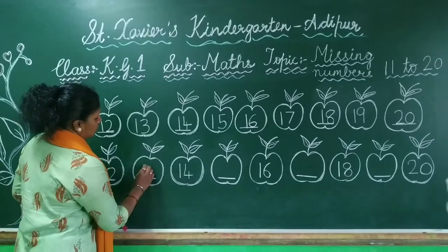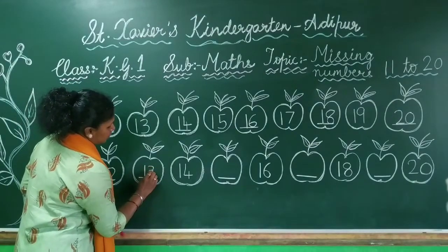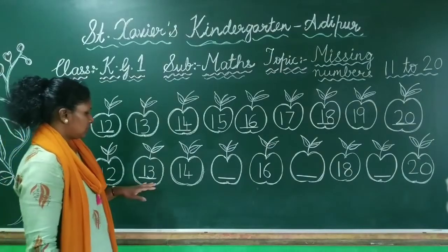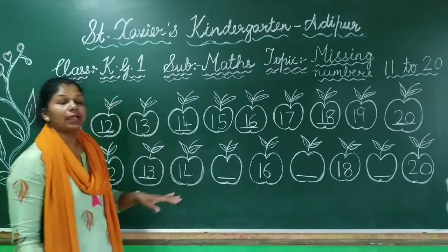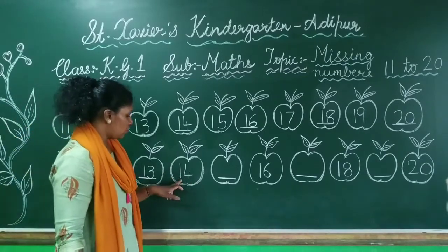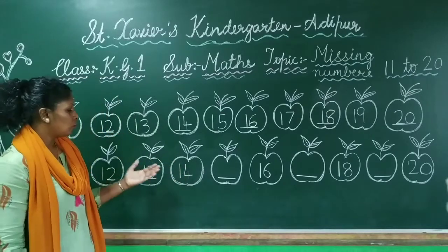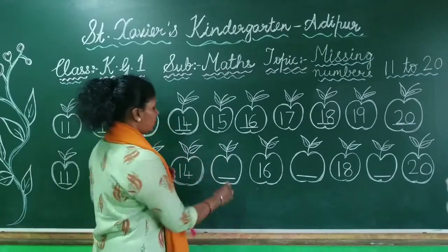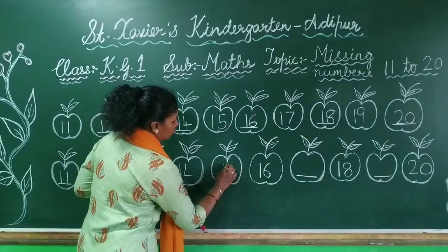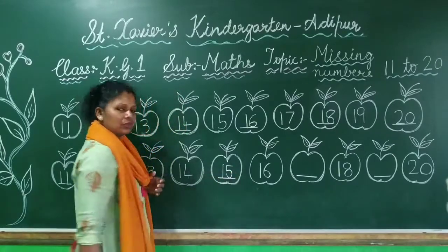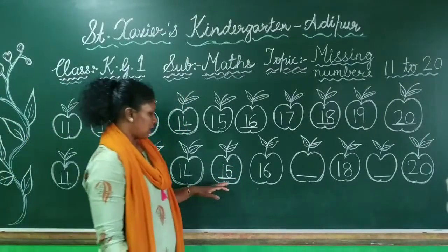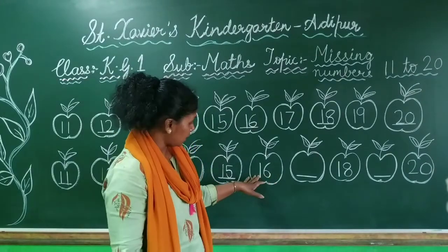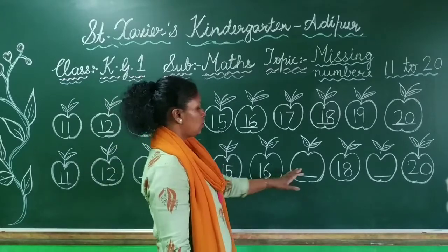Yes. 1, 3 — 13. Correct. 1, 3 — 13. Now this is 1, 4 — 14. Which number will come after 14? Correct. 1, 5 — 15. 1, 5 — 15. Yes. Now after 15, this is number 1, 6 — 16. Correct.